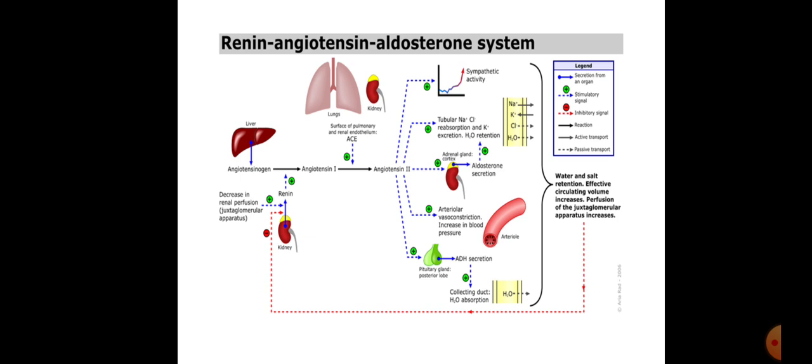To summarize the renin-angiotensin-aldosterone system: angiotensinogen is produced in the liver; renin converts it to angiotensin 1. Angiotensin 1 is converted to angiotensin 2 by ACE, mainly produced by the lung. Angiotensin 2 increases sympathetic activity, tubular sodium chloride reabsorption with potassium excretion, aldosterone production from the adrenal cortex, and adrenaline release from the adrenal medulla. There is arteriolar vasoconstriction increasing blood pressure via AT1 receptors, increased thirst, and inhibition of sodium-water excretion in the collecting duct. The ultimate effect is water and salt retention, maintaining circulating volume and tending to increase blood pressure.